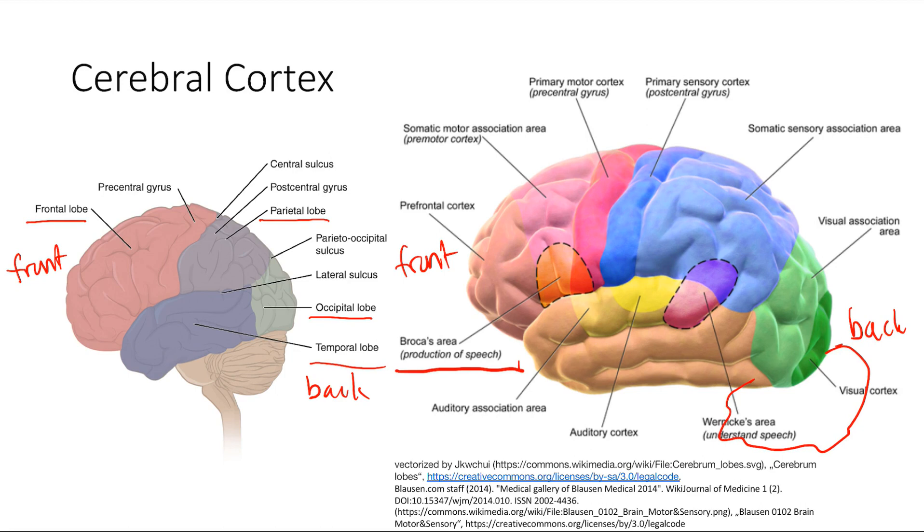Next one is Wernicke's area. This one is for understanding speech. Broca is to produce it, to actually make the words. Wernicke is to understand what someone says. So this one is in the temporal lobe. The location is very important too—you're gonna get pictures of this stuff, so you have to know the locations.